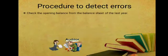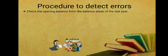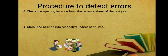The first procedure to detect errors is to check the opening balance from the balance sheet of the last year. When the auditor audits the accounts, he has to check the opening balance from last year's balance sheet. Last year's closing balance becomes the current year's opening balance, so the auditor needs to verify that.